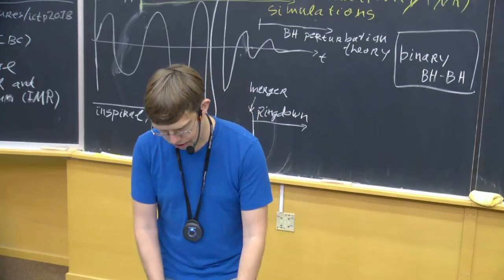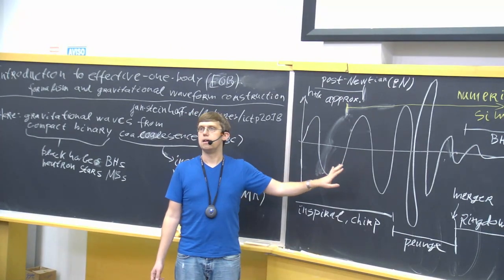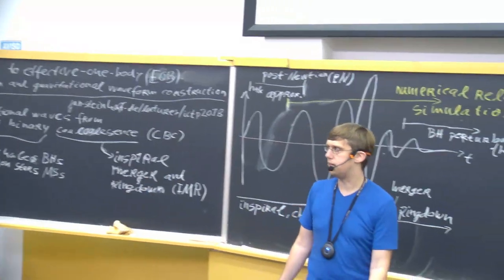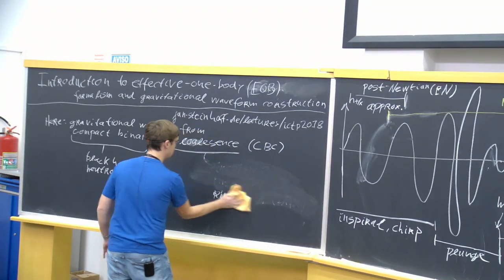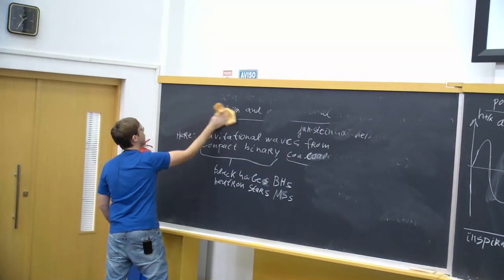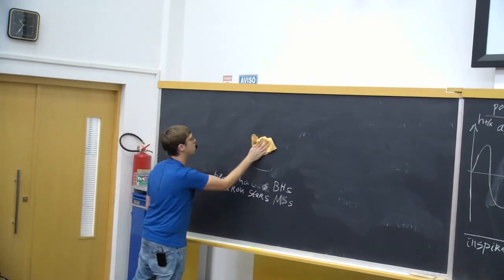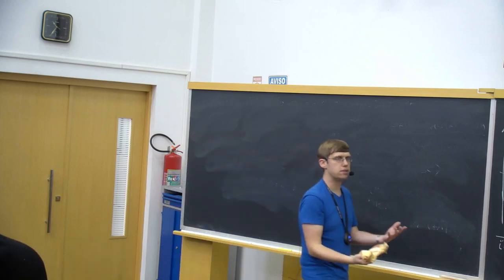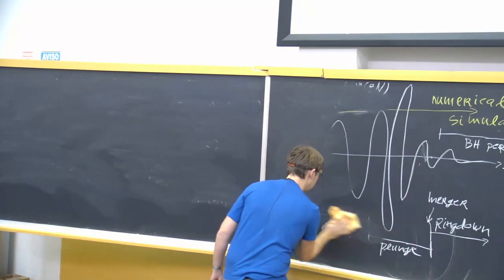Now I want to recap a little bit how to get a waveform for the in-spiral. That was probably explained by Luc Blanchet in the last week quite extensively. So I will not review everything about that, but just a few important things — what is the basis of that approximation, so that you have an idea of when it is applicable and why it eventually breaks down at some point. Let's look at the in-spiral as predicted by the post-Newtonian approximation.